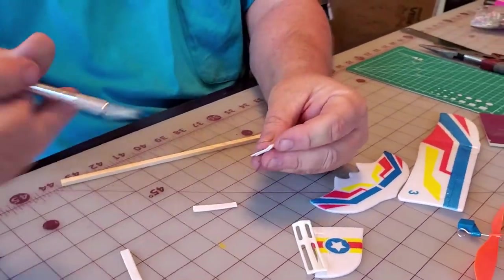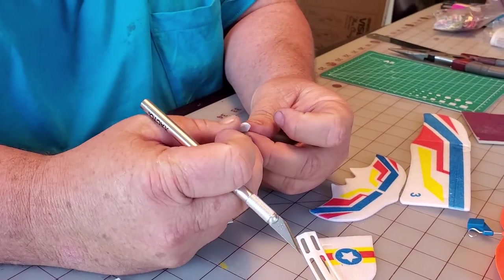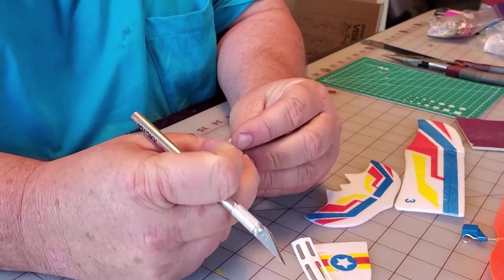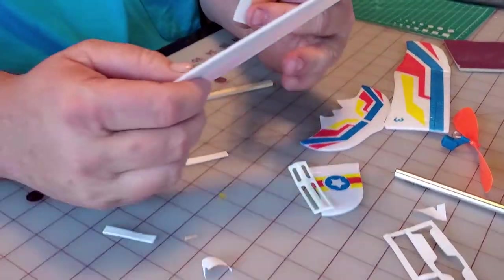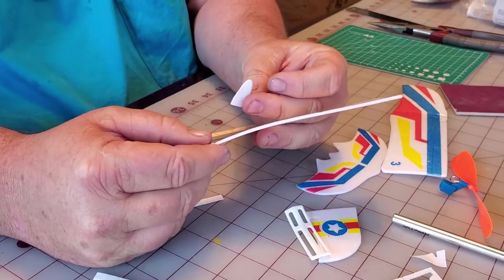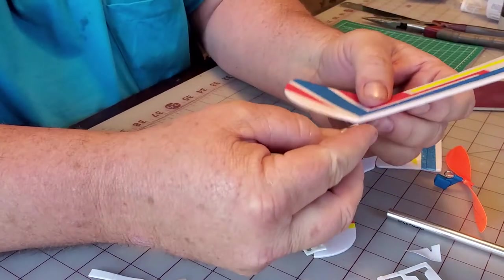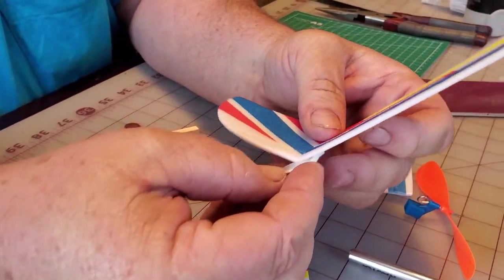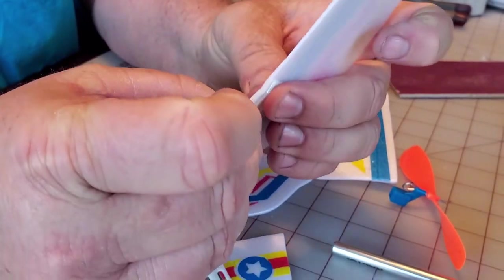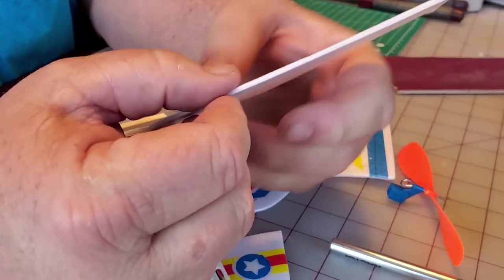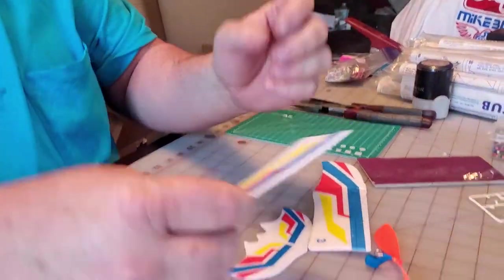Now I got to get this pulled off here. The tape is bigger than the part. I'm not going to try to trim it by no means. So you just put it on there like this. It just makes a little dihedral right there on the end of the wing.